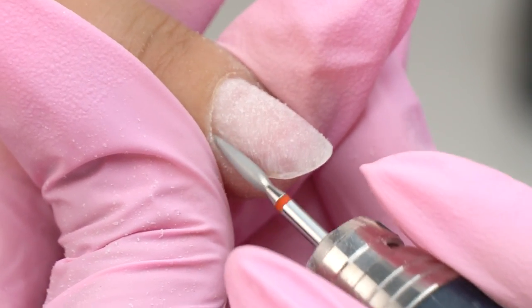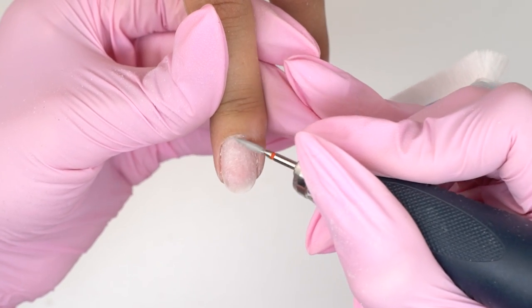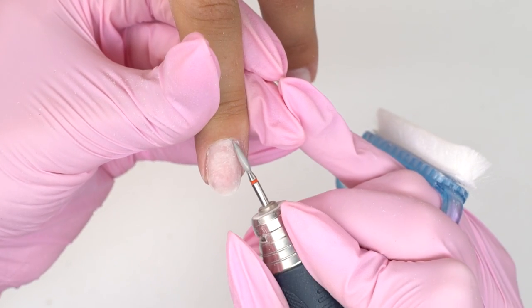My model's cuticle is fine, so I'm using a red drill bit. Now, I clean up the right sides in the reverse position.